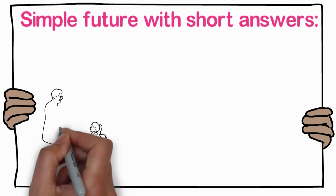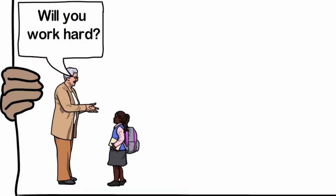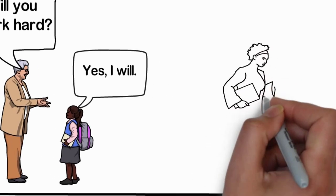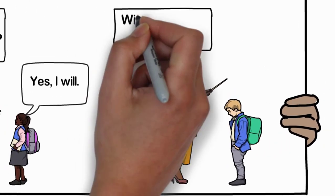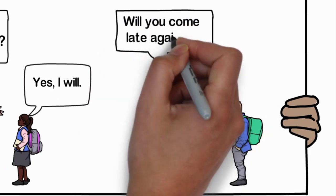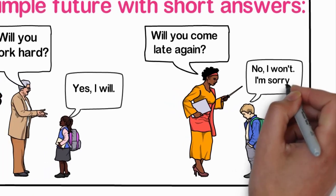Simple future with short answers. Let's now look at this dialogue. Will you work hard? Yes, I will. This is positive. Will you come late again? No, I won't. I'm sorry. This is negative answer.